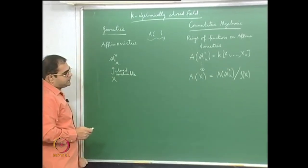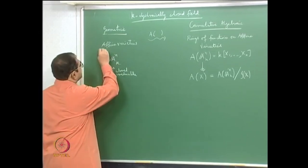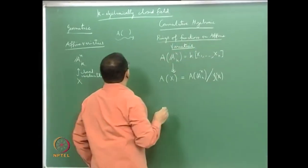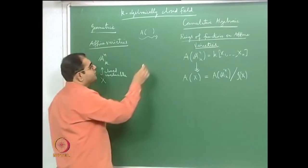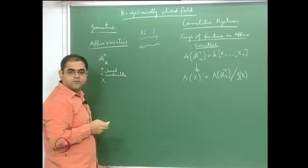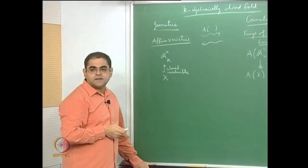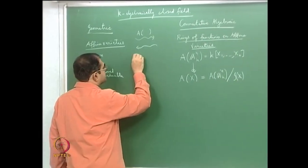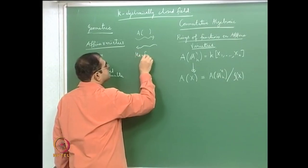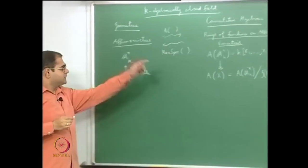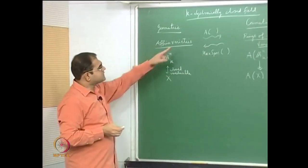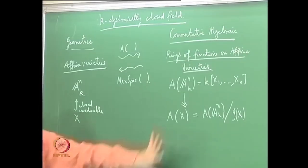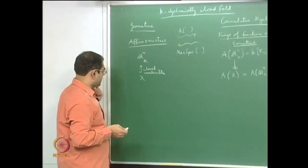On this side we have affine varieties; on this side we have rings of functions on affine varieties. There is some kind of bijection, and there is also a map going on this side — the so-called max spec — which I mentioned in the last lecture but did not explain. I would like to tell you what that is. These two together will tell you that whatever is happening here is exactly a mirror image of what is happening on this side.